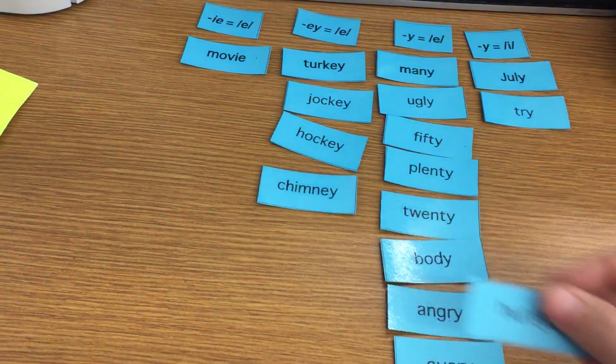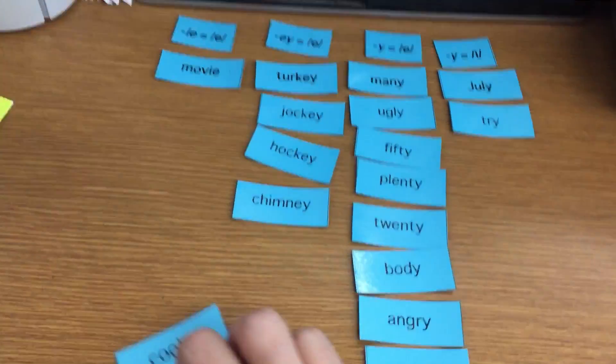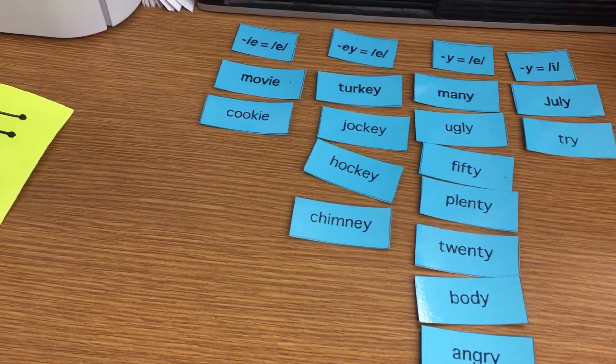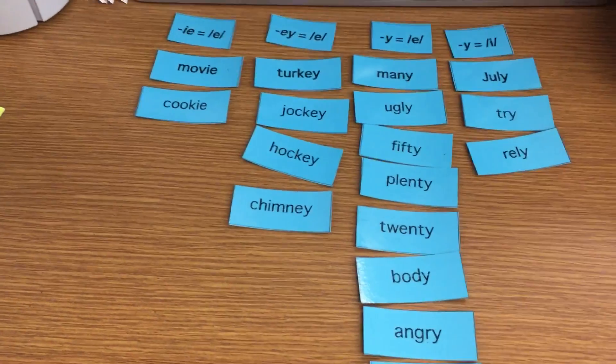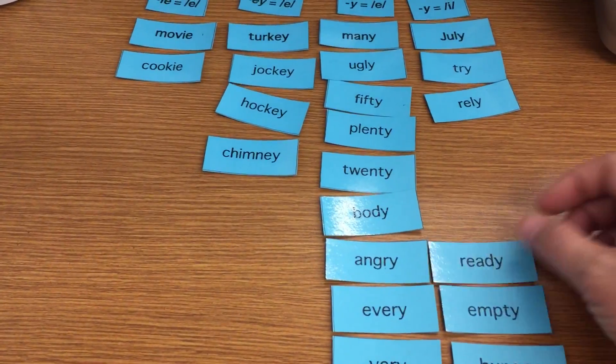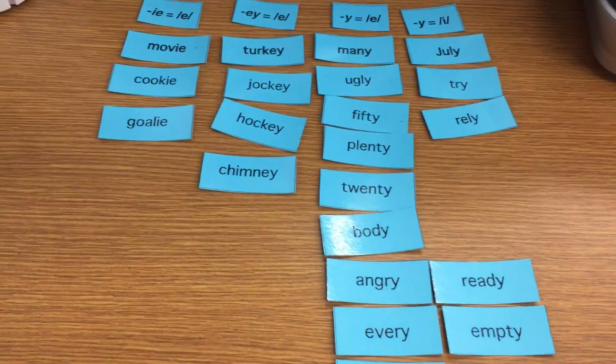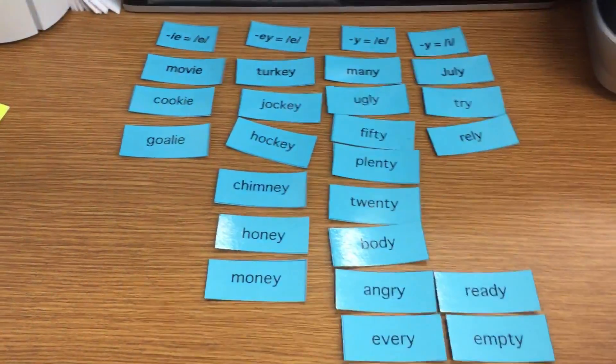Very has just a Y with the E sound. Chimney has an EY. Hungry has just the Y with the E sound. Cookie has the E with the IE and Rely has an I sound. Empty has a Y with the E sound. Ready has a Y with the E sound. Goalie has an IE. Honey has an EY. And Money has an EY.